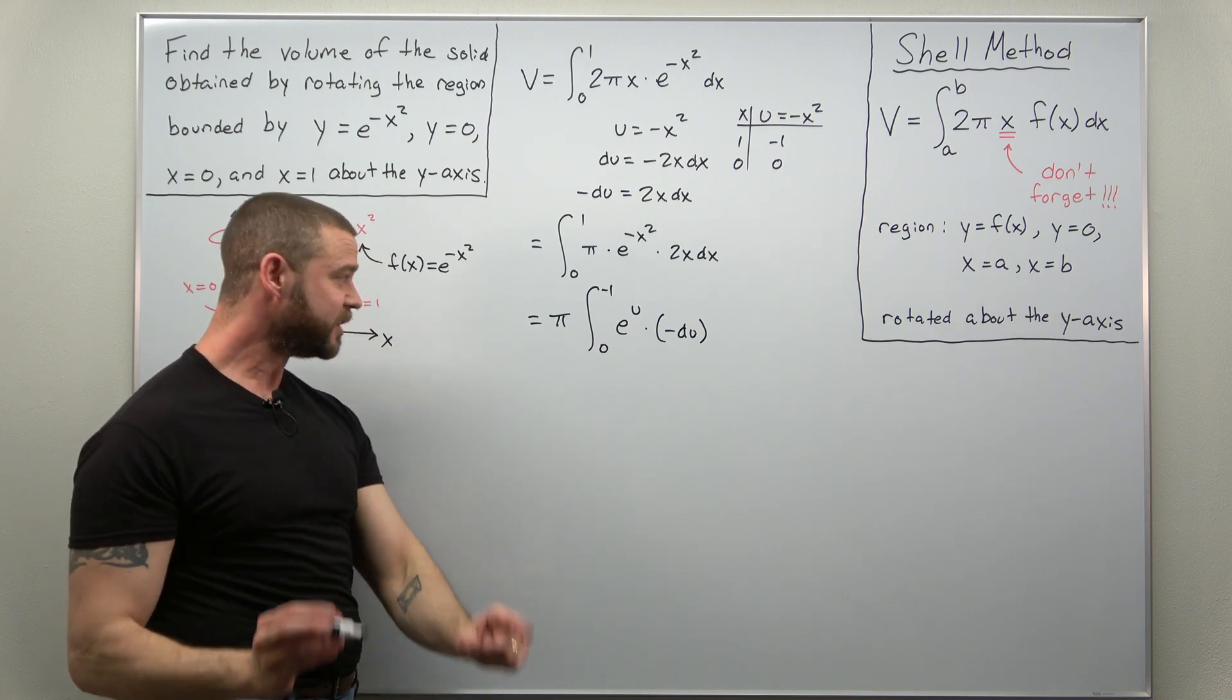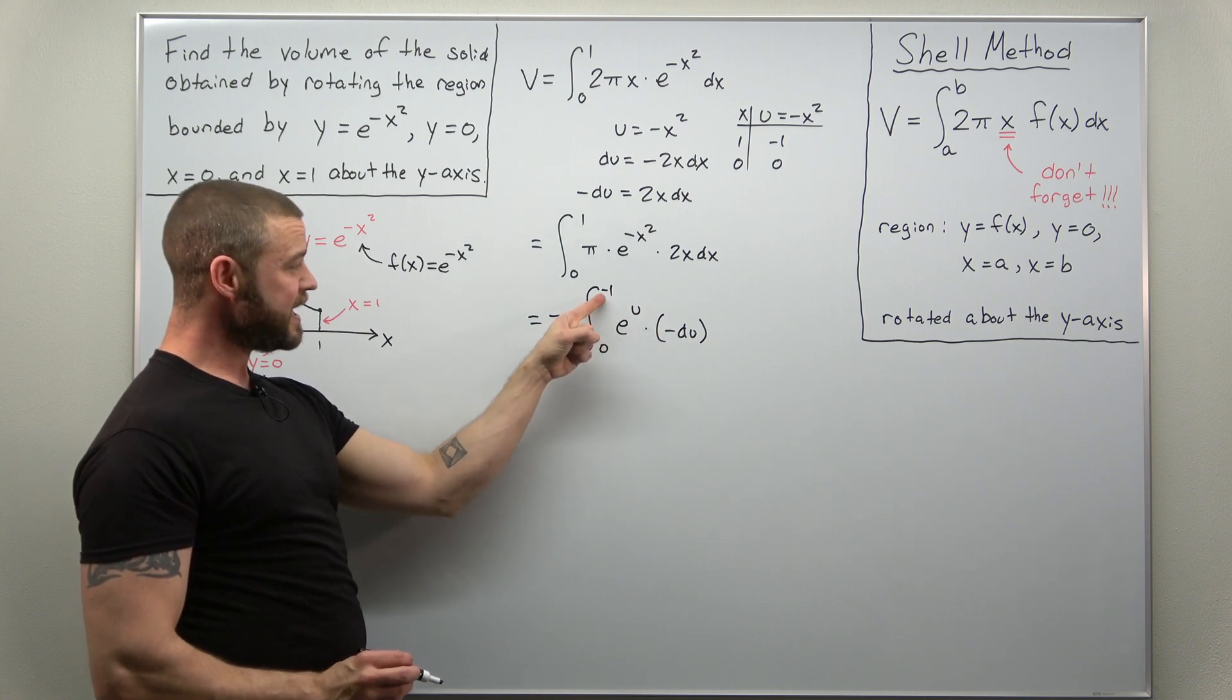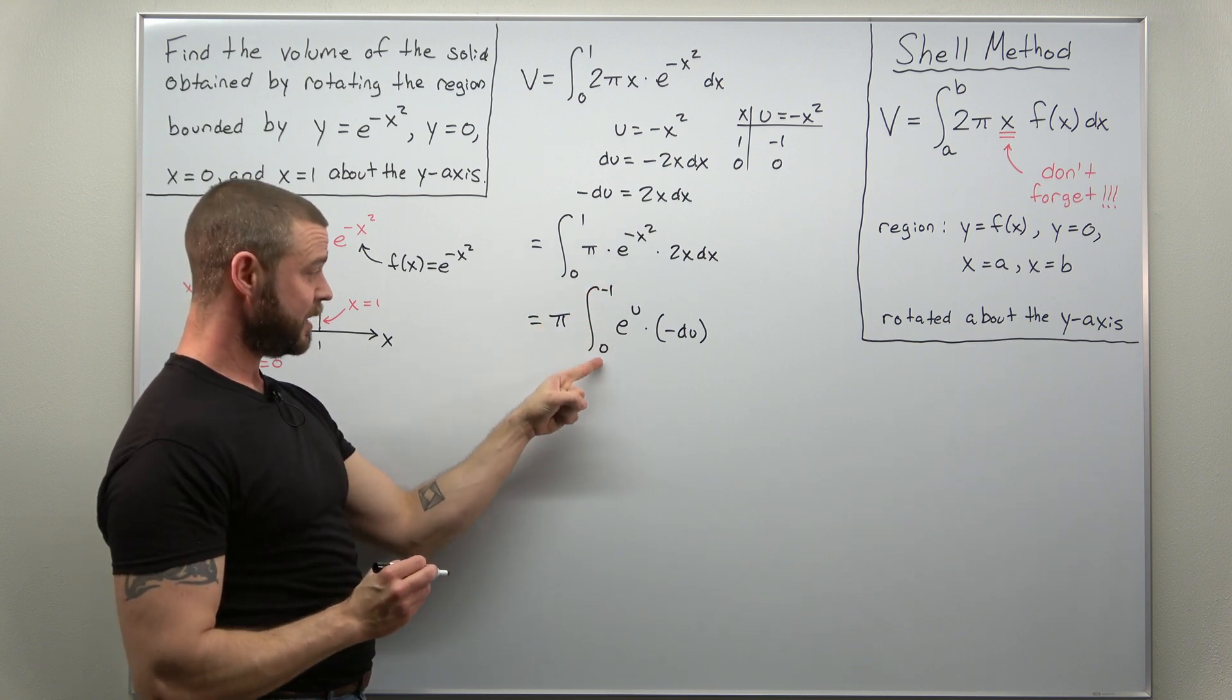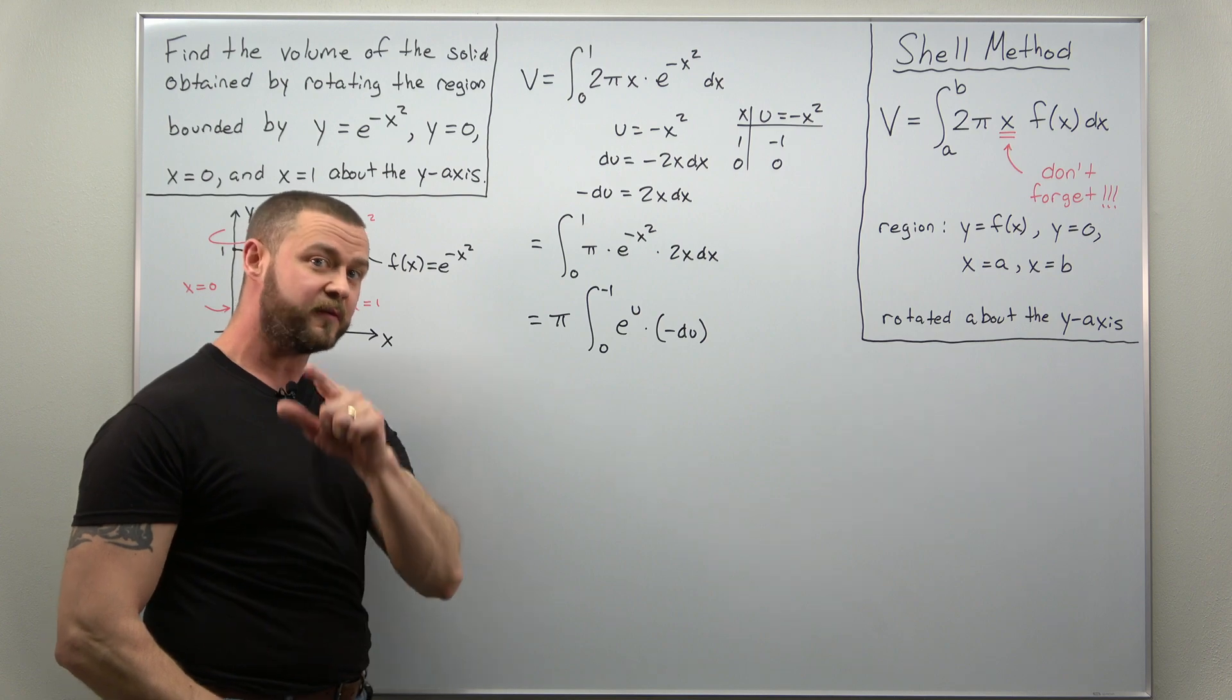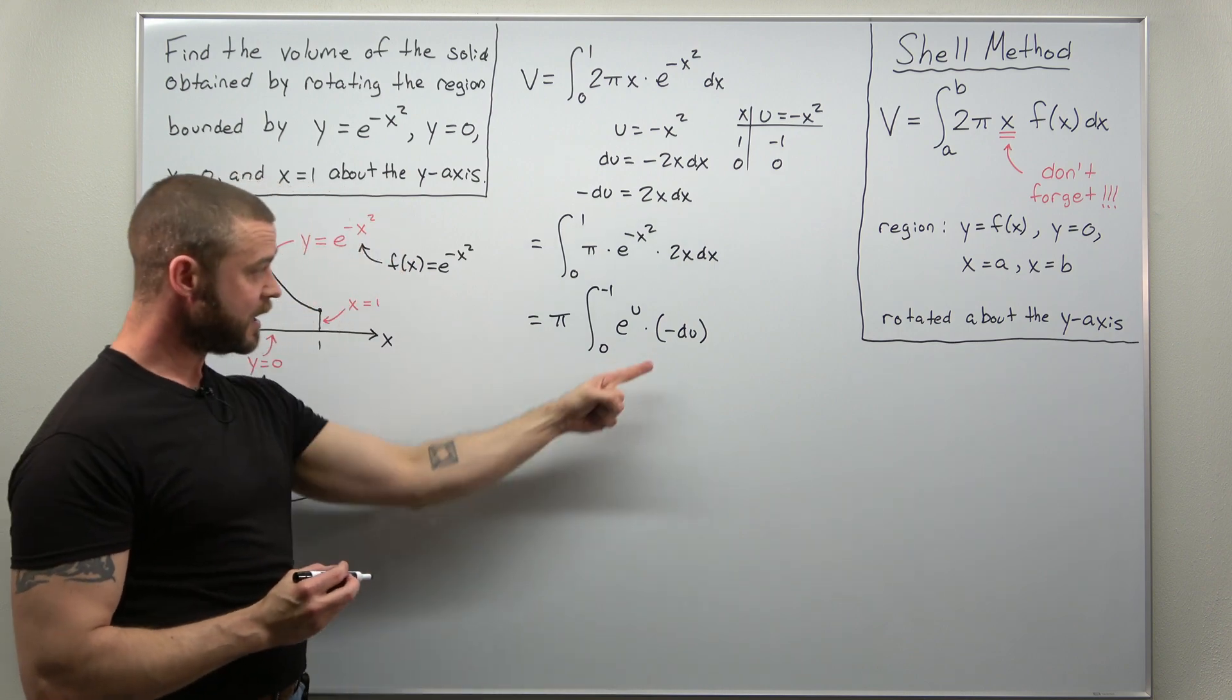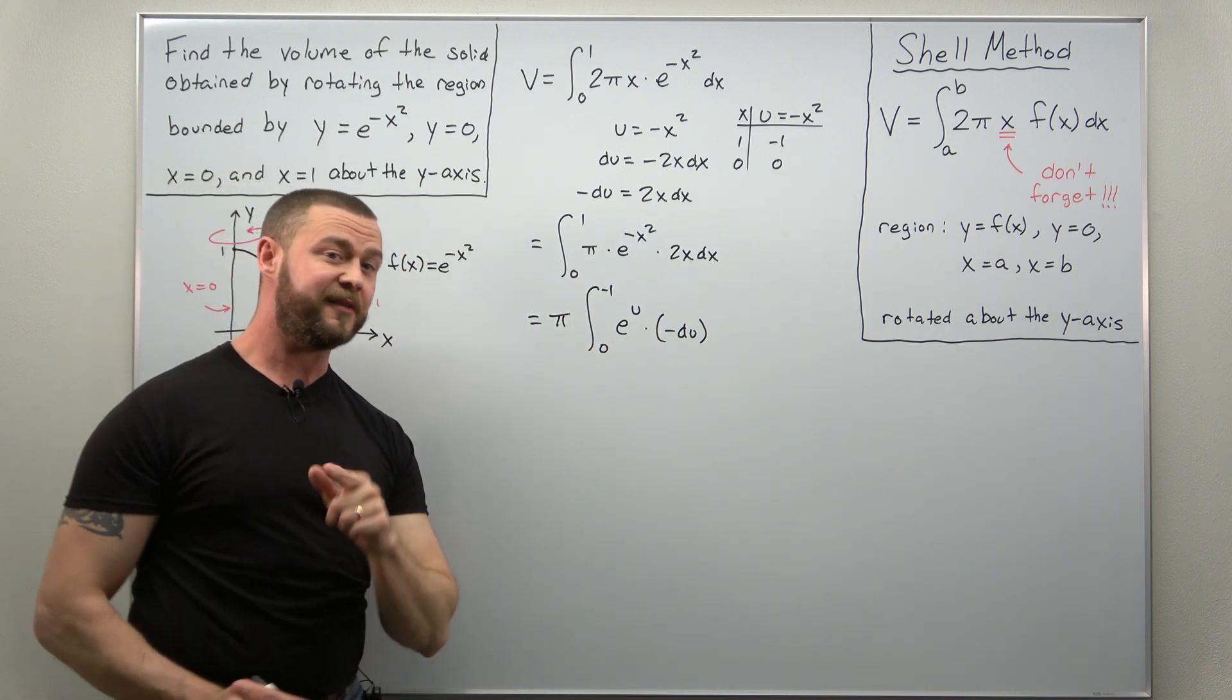And I'm just going to clean this up. I don't like the fact that there's a negative and my limits seem to be a little bit weird. Usually, you want the bigger number as your upper limit and the smaller number as the lower limit. We can use a property of integrals. If I flip my limits of integration, I introduce a negative. And since we already have a negative there, when I flip this, that extra negative will cancel out.